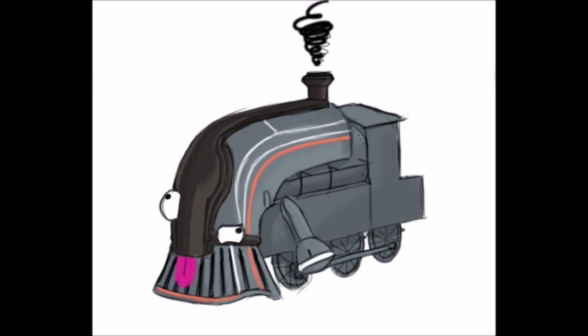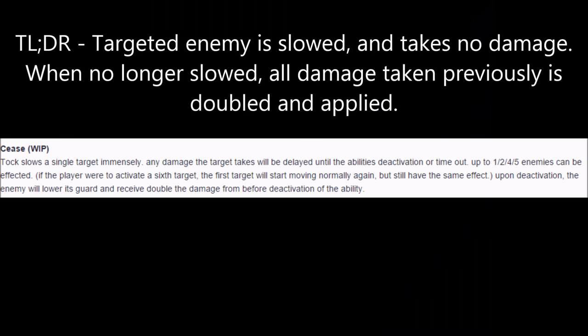TOC's first ability is Cease. Upon targeting an enemy, TOC slows that target extremely for a duration, and the target will take no damage. However, once the duration ends or when TOC deactivates the ability, the target will no longer be slowed, but all damage that it has taken during its slowed period will be applied and doubled.